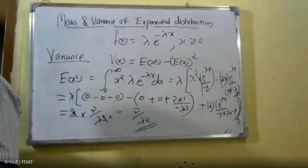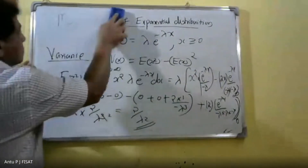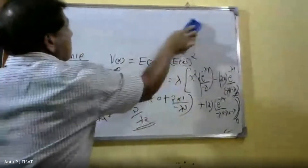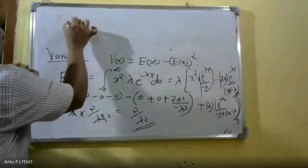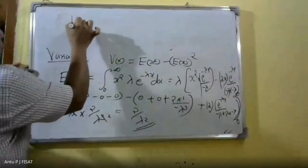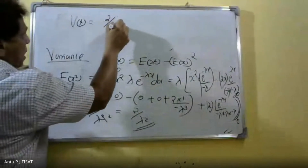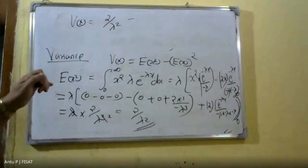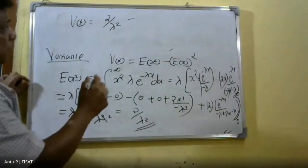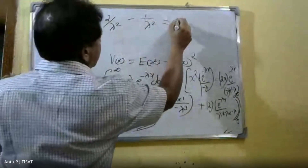Now we find the variance. Variance = E[X²] − (E[X])² = 2/λ² − (1/λ)² = 2/λ² − 1/λ² = 1/λ². Therefore, the variance of the exponential distribution is 1/λ².